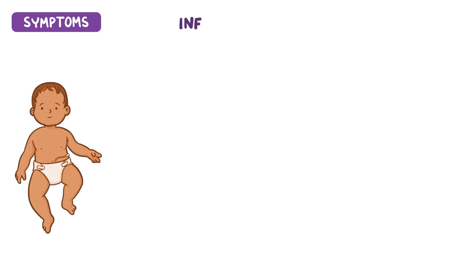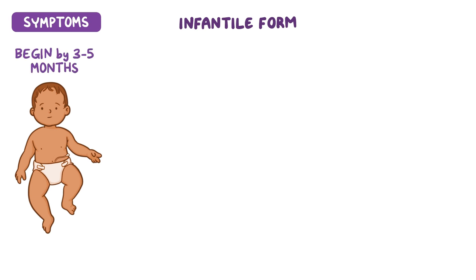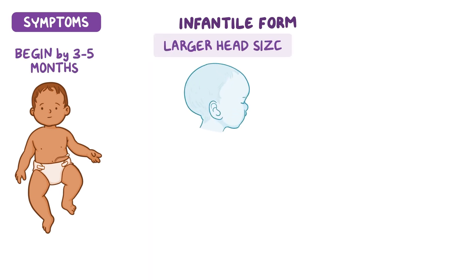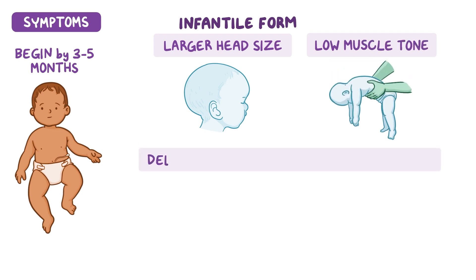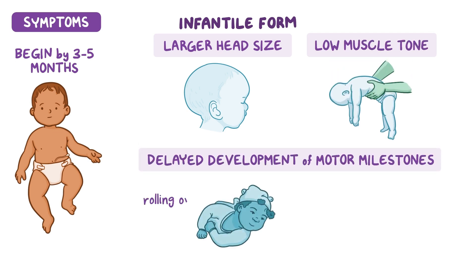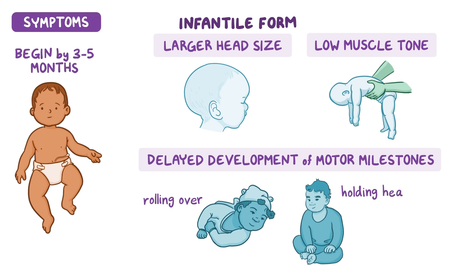In Canavan disease, symptoms vary based on the age of onset. Children with the early onset, or infantile form, typically have usual psychomotor development for the first few months of life. Symptoms begin by three to five months of age and include a larger head size, low muscle tone, and delayed development of motor milestones, like rolling over, holding their head upright, and sitting up without support.